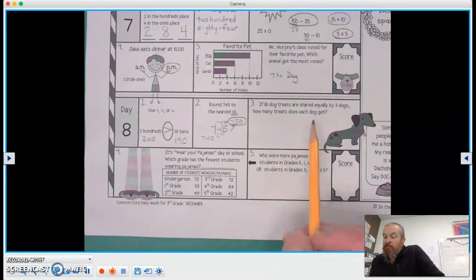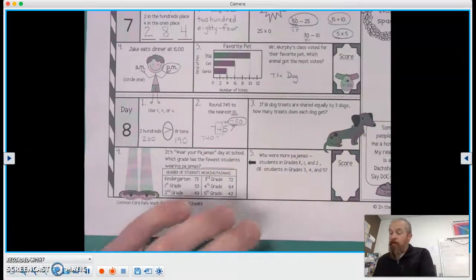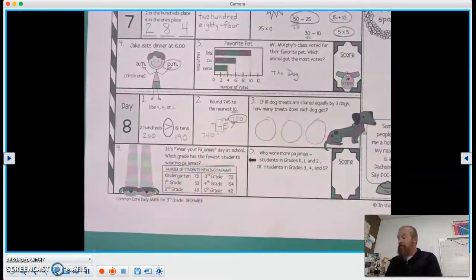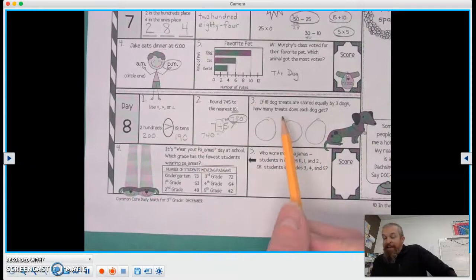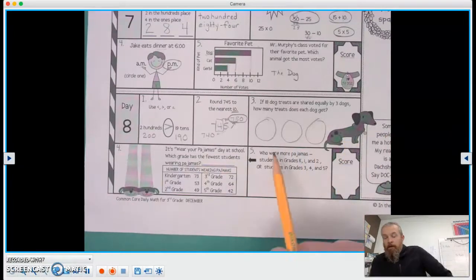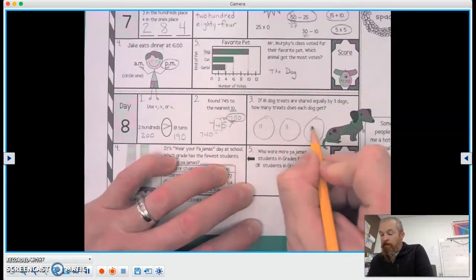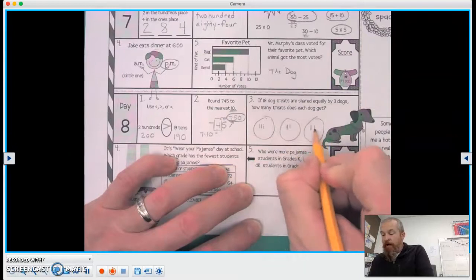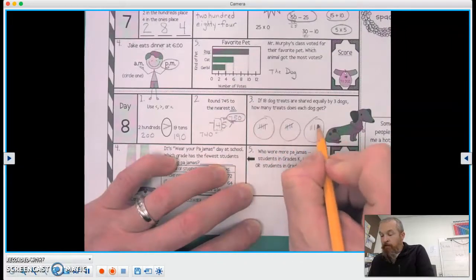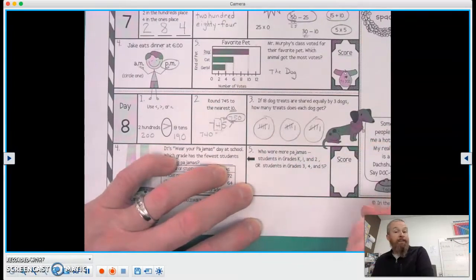All right, number three. If 18 dog treats are shared equally by three dogs, how many treats does each dog get? So we have three dogs. There's dog one, dog two, and dog three. Hello, Mrs. Mayor. And we have 18 dog treats. So we have to split those 18 dog treats equally. So let's go, 1, 2, 3, 4, 5, 6, 7, 8, 9, 10, 11, 12, 13, 14, 15, 16, 17, 18. That's 18. They are equal.